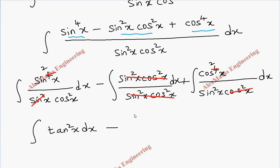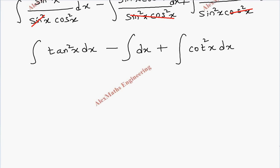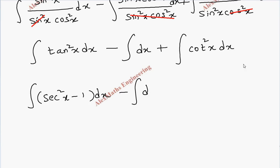So we have the integral of tan²x dx, minus the integral of dx, plus the integral of cot²x dx. Now we use trigonometric identities: tan²x can be written as sec²x − 1, and cot²x can be written as cosec²x − 1.